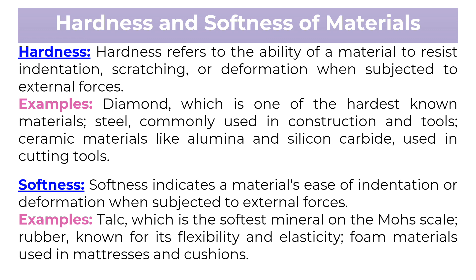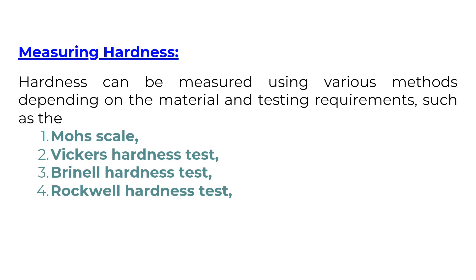Softness indicates a material's ease of indentation or deformation when subjected to external forces. Examples include talc, which is the softest mineral on the Mohs scale; rubber, known for its flexibility and elasticity; and foam materials used in mattresses and cushions. Hardness can be measured using various methods such as the Mohs scale, Vickers hardness test, Brinell hardness test, and Rockwell hardness test.